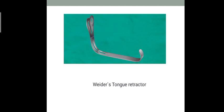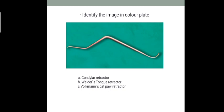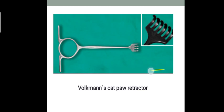This is Weeder's tongue retractor - a heart-shaped retractor commonly used for retraction of the tongue in medial and anterior direction. Remember, do not place it too posteriorly or it can cause gagging. The condylar retractor looks like a tongue depressor but is narrower and C-shaped from one end. This is Volkmann's cat paw retractor, with one end looking like a cat paw, most commonly used for retraction of soft tissues, mucosa, and skin.